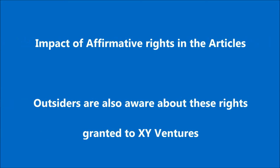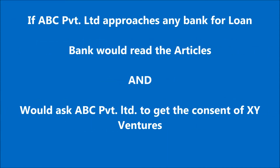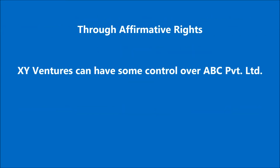So what is the impact if outsiders know about these affirmative rights? Tomorrow, if ABC Private Limited approaches any banker for a loan, from the articles that banker would have the knowledge that ABC Private Limited needs to take the consent of XY Ventures before taking any loan exceeding the specified limit. That banker would ask ABC Private Limited to approach XY Ventures to take the consent. So through the affirmative rights, XY Ventures can control the borrowing of ABC Private Limited.